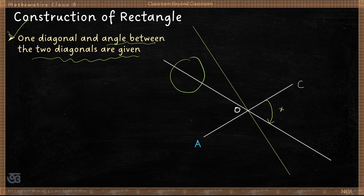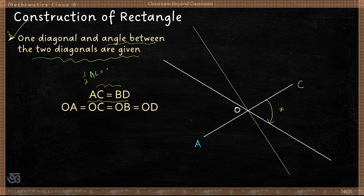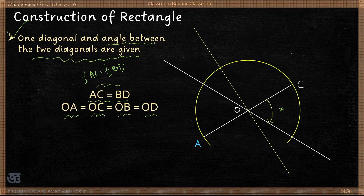Point D will be on one side and point B on the other side of O along this new line. To locate B and D, use the important property that the diagonals are equal: AC equals BD. So half of AC equals half of BD, meaning OA equals OC equals OB equals OD. Since all four half-diagonal lengths are equal, we draw a single arc with center O and radius OA, passing through all four points A, B, C, and D.